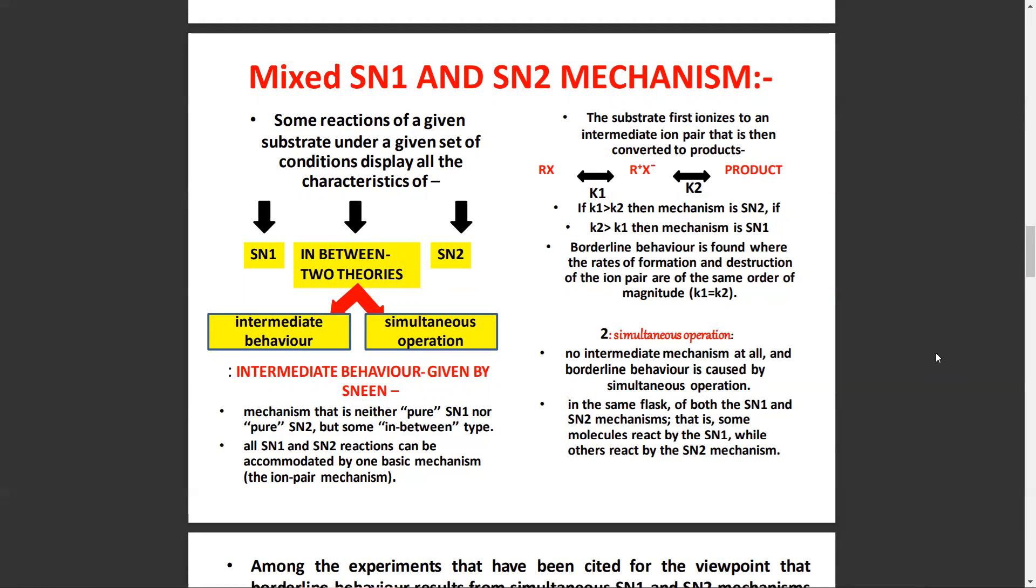Intermediate behavior is given by a mechanism that is neither pure SN1 nor pure SN2, but some in-between type. All SN1 and SN2 reactions can be accommodated by one basic mechanism, the ion pair mechanism. The substrate first ionizes to an intermediate pair that is then converted to product.